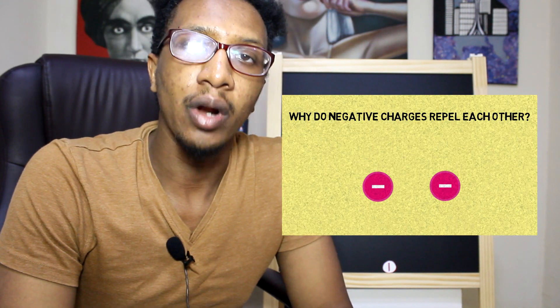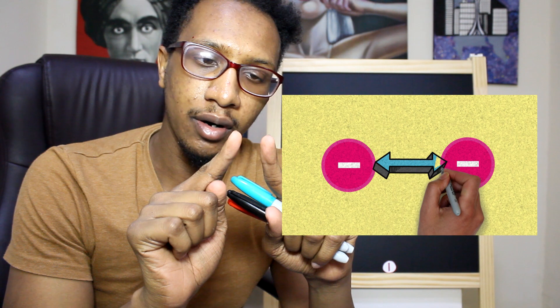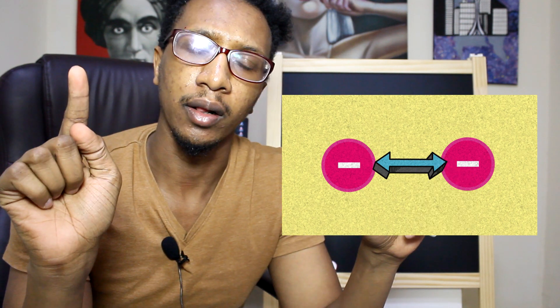I made a video called 'Why do like charges repel each other?' We talked about that and gave the example of two electrons coming together and then repelling, but the question is why and how do they repel without even contacting each other? We gave the answer that it is a photon that comes in the middle between them and communicates for them to move away from each other.